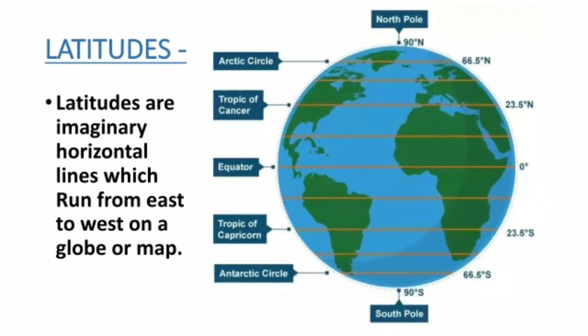Latitude is an imaginary line which is horizontal, running east to west on the globe. As you can see in the picture, latitudes are horizontal lines on the globe. These lines are parallel, meaning they are at equal distances from each other.